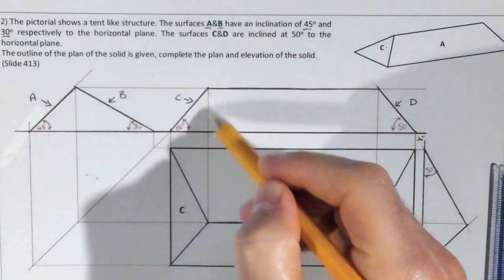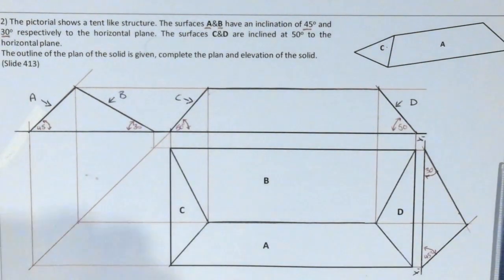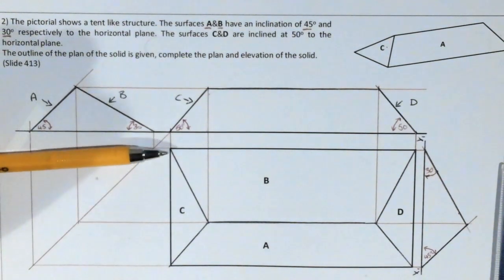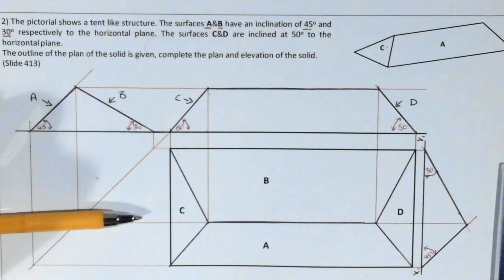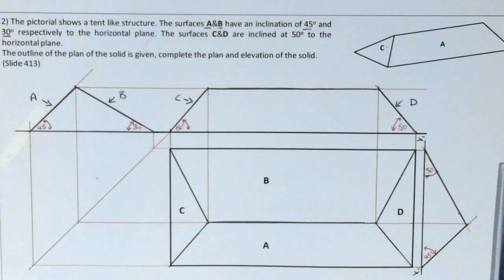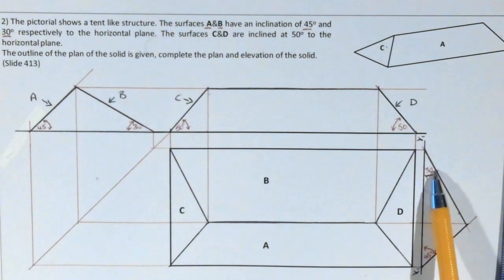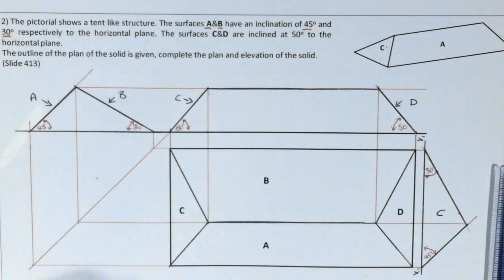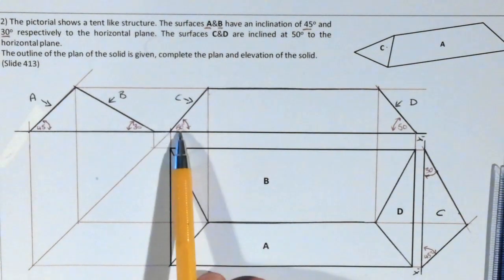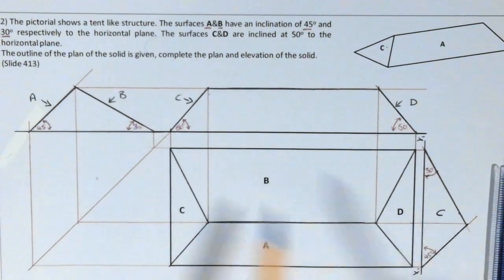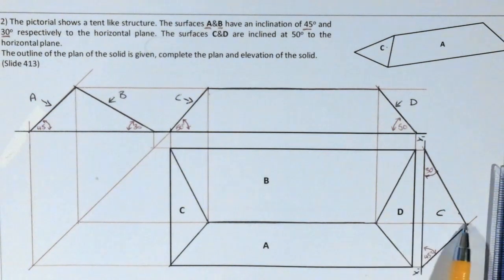Another way to determine the height was to project an auxiliary view perpendicular to this edge. Projecting perpendicular gave us the true inclination of surfaces B and A — A at 45 degrees and B at 30 degrees to the horizontal plane. The surface shown in the auxiliary is surface C, just slightly tilted backwards at 50 degrees. That was an alternative way to get the height — either the end elevation or the auxiliary view could be used.